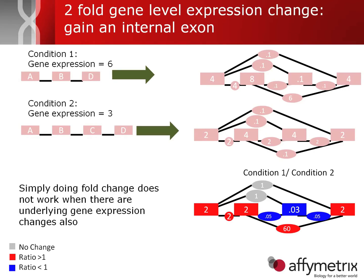Now, making the situation slightly more complicated: condition one has a base gene-level expression of six and condition two has a base gene-level expression of three — essentially the same example as before but with all values multiplied by two. When you do a simple condition one over condition two fold change calculation, basically all exons appear to be differentially regulated. Simply doing this is not a way to investigate splice variance changes, because the individual splicing events are hidden underneath the gene-level expression changes.